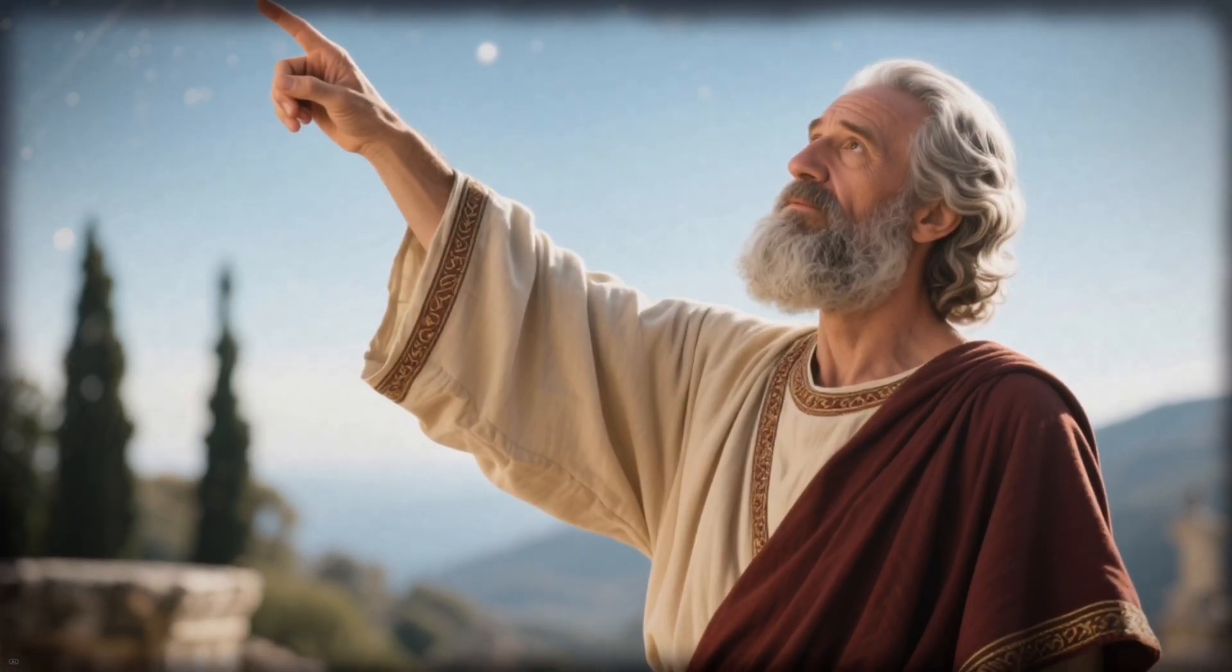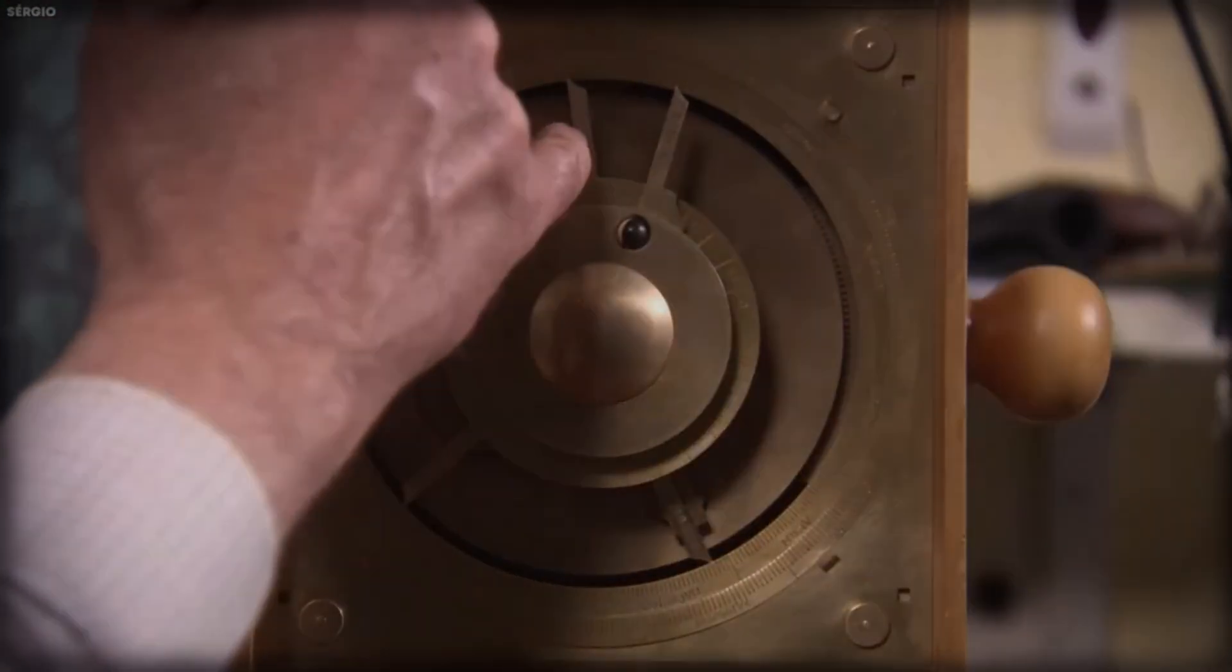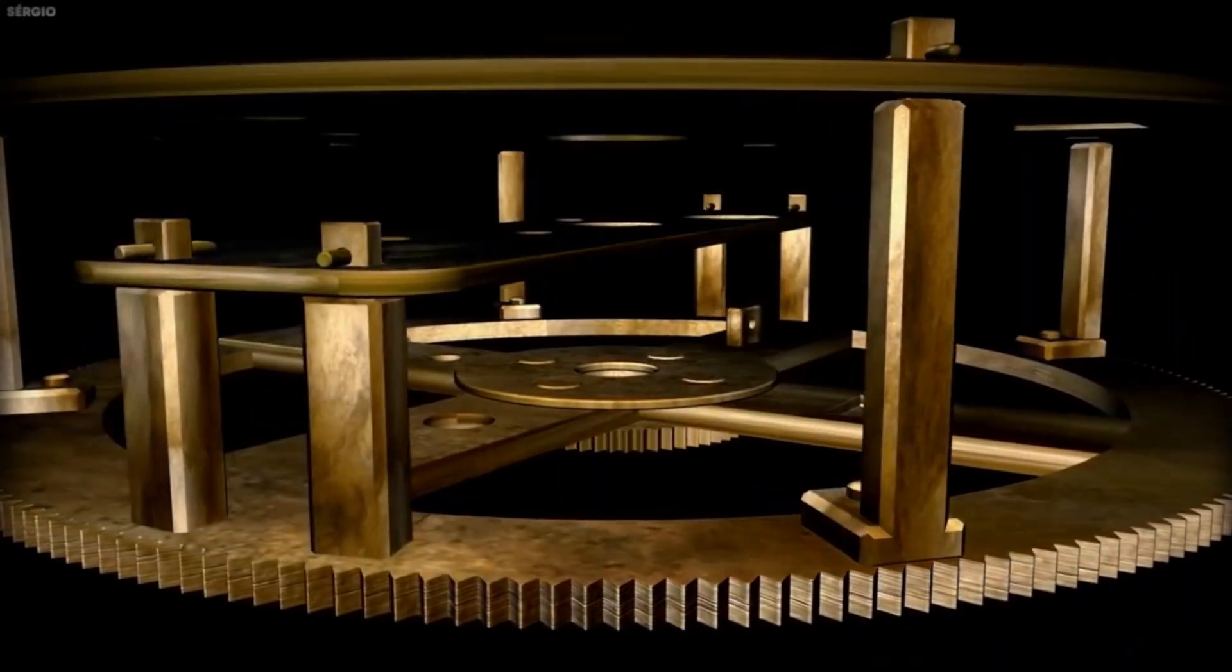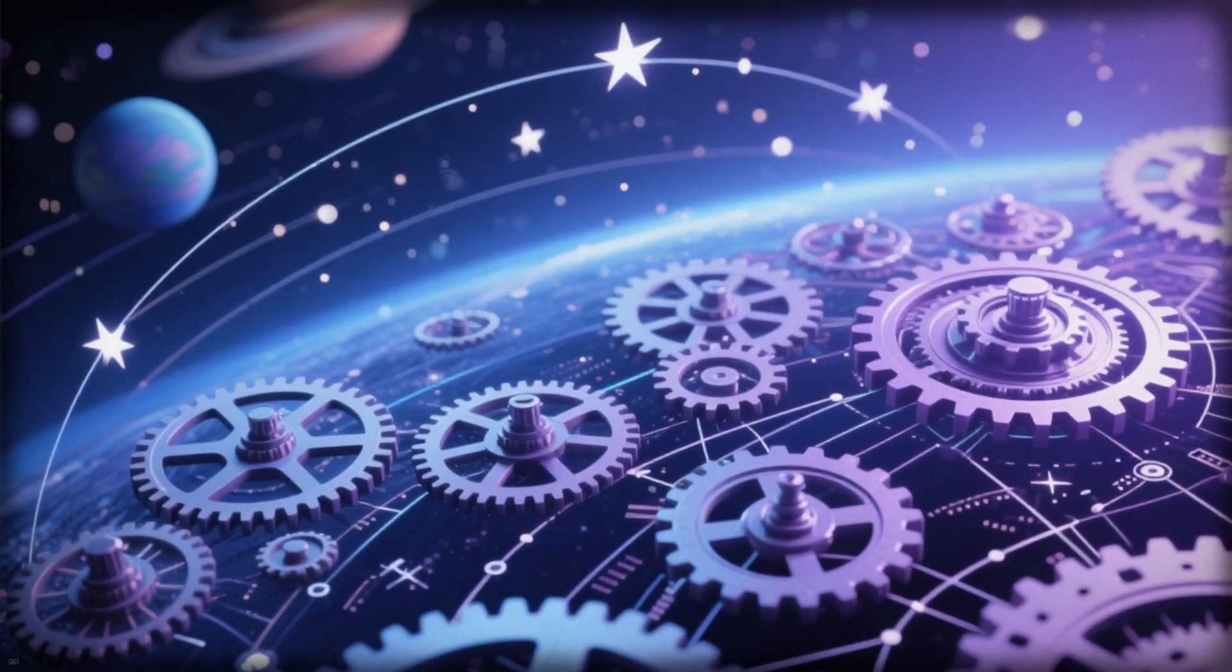The Greeks didn't just watch the stars. They mechanized them. The device embodied a belief that the universe followed patterns, that time, fate, and motion could all be expressed in gears and ratios. To them, understanding the sky meant understanding existence itself.